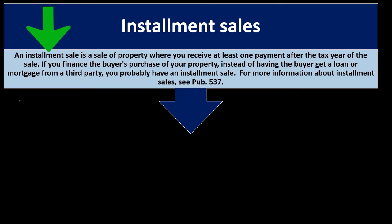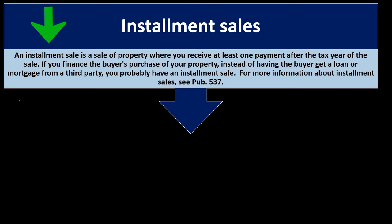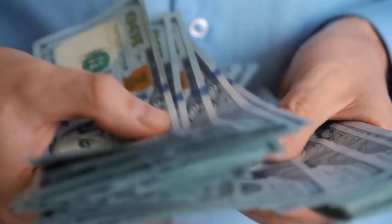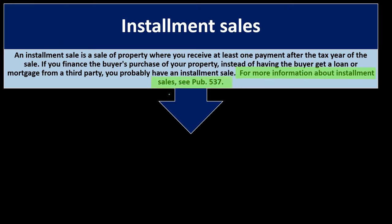Installment sales: an installment sale is a sale of property where you receive at least one payment after the tax year of the sale. You made a sale but haven't yet received all the money — on an accrual basis you'd record the sale at the time it occurred, but you might not have the cash to pay the taxes. If you finance the buyer's purchase of your property instead of having the buyer get a loan from a third party, you probably have an installment sale. For more information, see Publication 537.